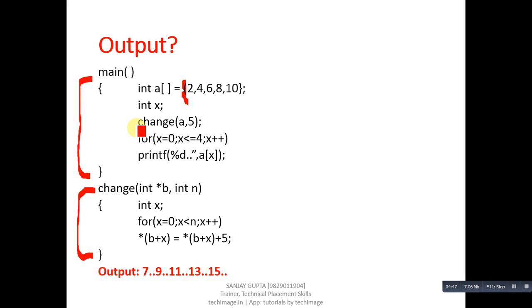Now I'm going to explain how this is possible. This change function call transfers control to its definition. It is passing array a and 5, its size. Base address of a is received into pointer b, and 5 is received into n. This loop will repeat five times.